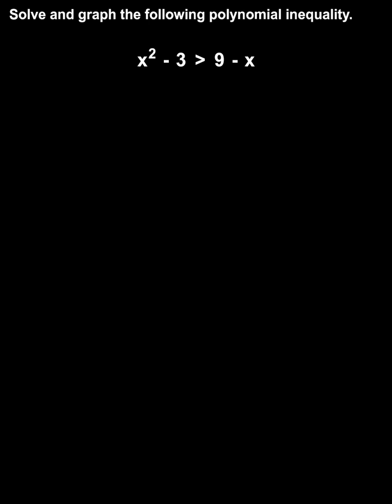To solve a polynomial inequality like the one shown here, our first step is to write the corresponding equation. In other words, we simply change the inequality sign to an equals sign, and we have x squared minus 3 equals 9 minus x.